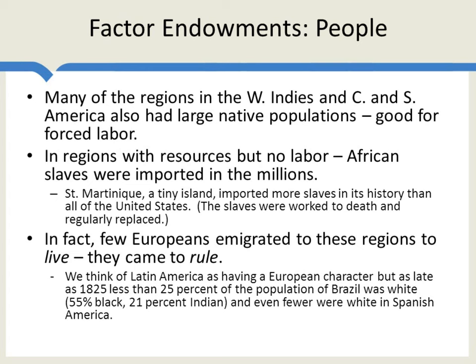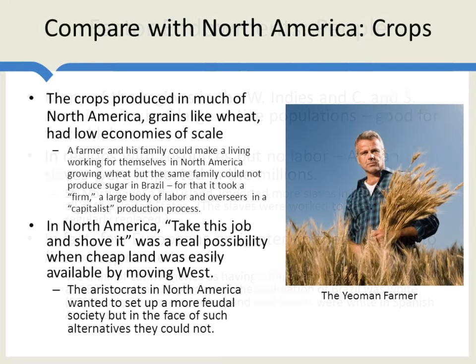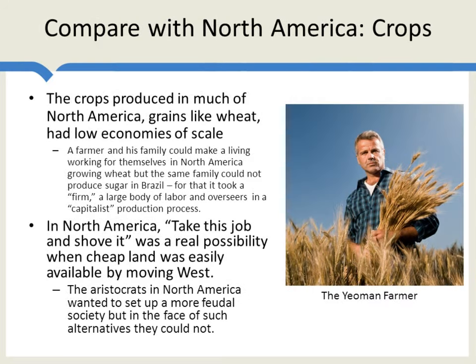So one factor endowment was the access to slave labor. Now let's compare the factor endowments of Central and South America — the three S's: slaves, silver, and sugar — with the factor endowments of North America.